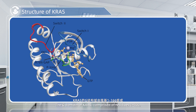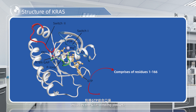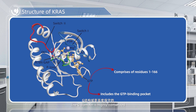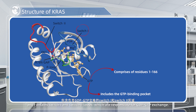The G-domain of K-RAS, comprised of residues 1 to 166, includes the GTP binding pocket — a region essential for interactions between the putative downstream effectors and GTPase-activating proteins. The G-domain is highly conserved and contains switch1 and switch2 loops, which are responsible for GDP-GTP exchange.